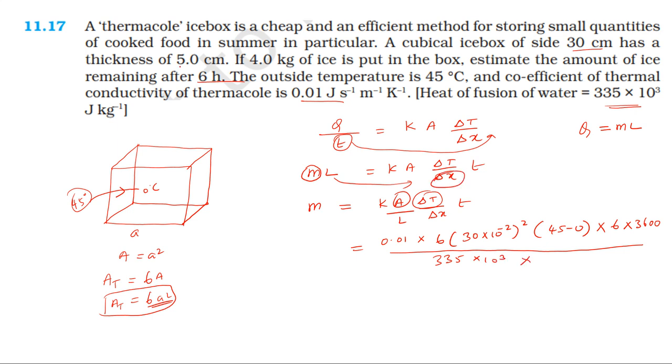Into Δx - the thickness. Thickness is 5 cm, 5 cm = 5 × 10⁻² meters. This is simply the mass of the ice melted.